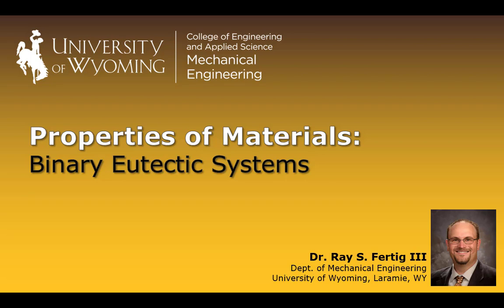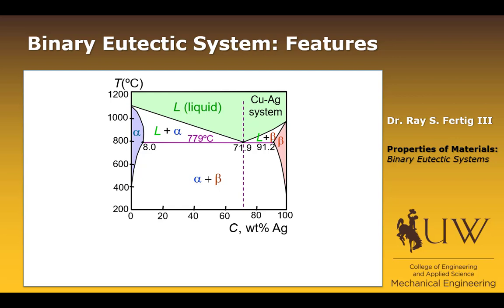Today we want to talk about binary eutectic systems. Let's begin by looking at an example binary eutectic system. Remember from our discussion on binary isomorphous phase diagrams, binary just meant we had two components, and in this case we also have two components. This is a copper-silver system.